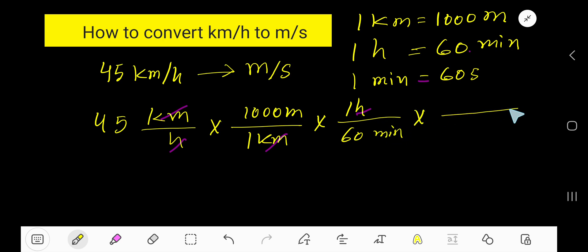Now we'd like to convert minute to second using this. So we need to cancel minute, so minute will come at the top. With minute we have 60 seconds. Now we have meter per second.